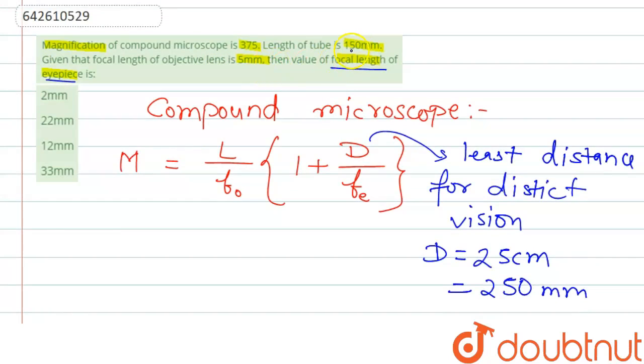The length of the tube is given 150, the magnification is 375, and the focal length of objective is 5 millimeter. Now if we substitute the values in the formula...